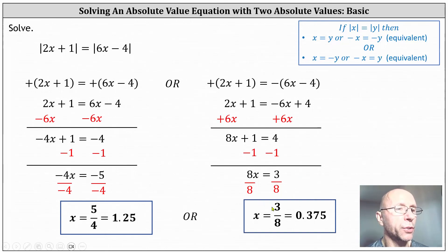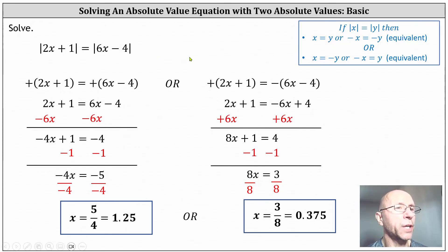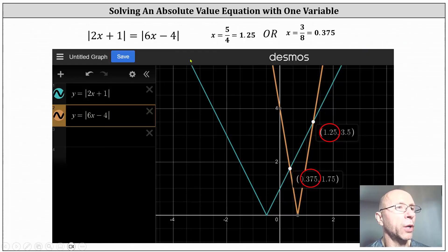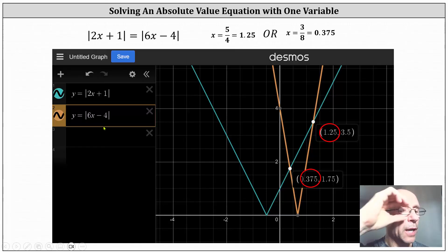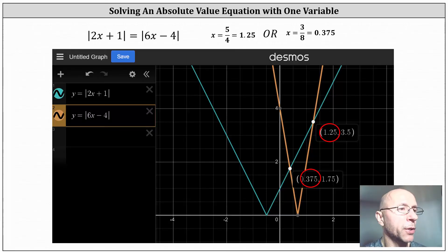These are the two solutions to the given absolute value equation. Before we go, let's check this graphically. To check the solution graphically, we graph y equals the absolute value of the quantity 2x plus 1 and y equals the absolute value of the quantity 6x minus 4. The x-coordinates of the intersection points will be the solutions.